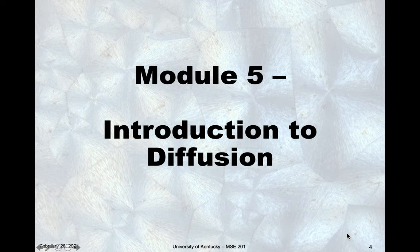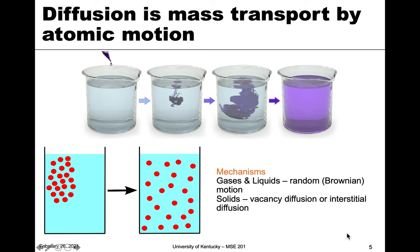In this module we're going to start a new chapter on diffusion. Diffusion is the mass transport mode which relies on atomic motion — we're not talking about motion from stirring, but the motion from the atoms themselves. Atoms are always vibrating and moving, and you may have heard this referred to as Brownian motion when referring to gases and liquids.